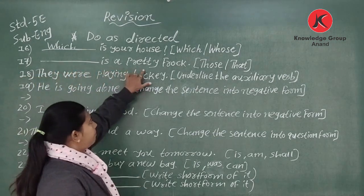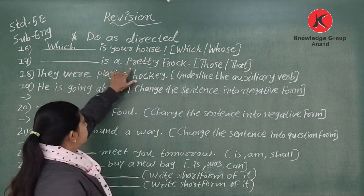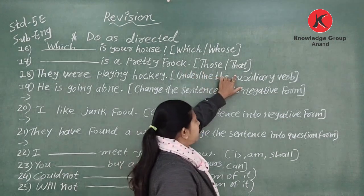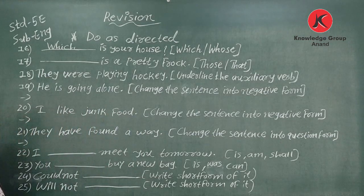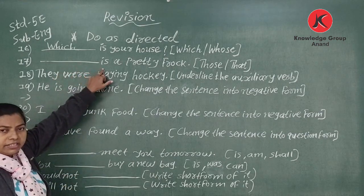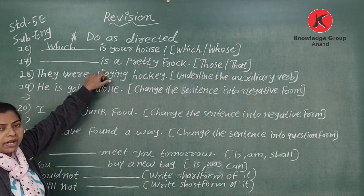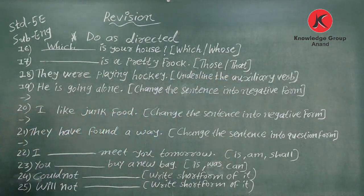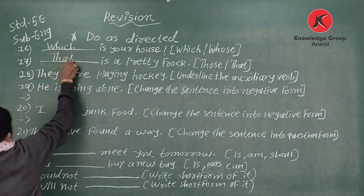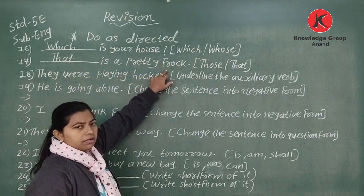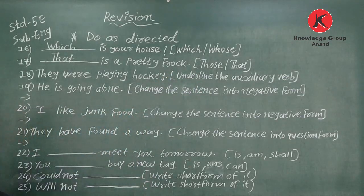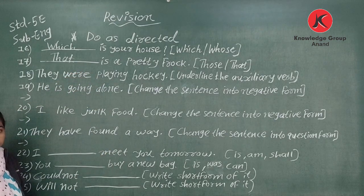Number seventeen: '___ is a pretty frog.' Bracket says 'that' or 'those.' Since 'frog' is singular, we use 'that.' So 'That is a pretty frog.' If we used 'frogs' (plural), we would use 'those.'